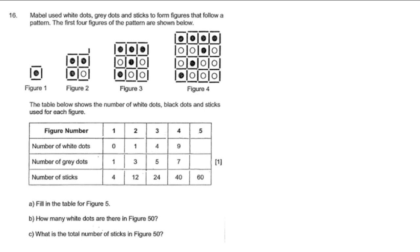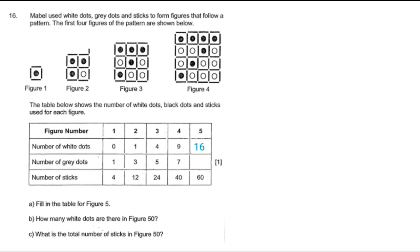The first part of the question is to fill in the table for figure 5. We notice that the number of white dots is nothing but a square number. So for figure 1 there are 0 white dots, for figure 2 there is 1 white dot, for figure 3 it's 2 times 2 which is 4 white dots, and for figure 4 it's 3 times 3. So for figure 5 it should be 4 times 4 which is 16 white dots.